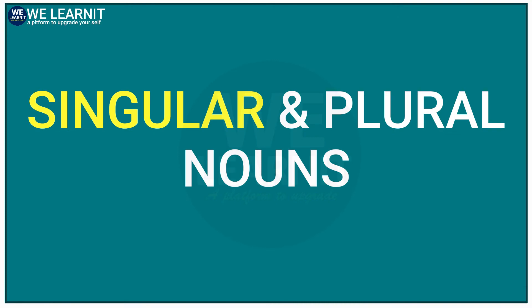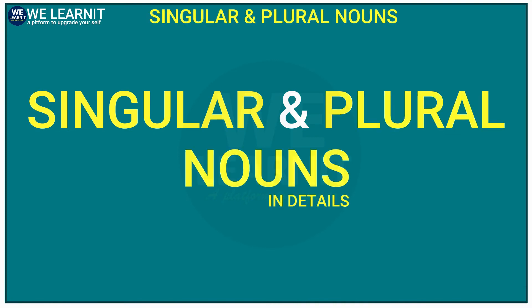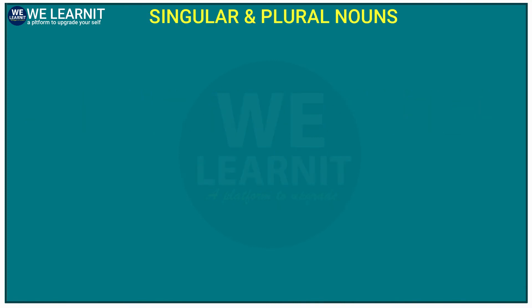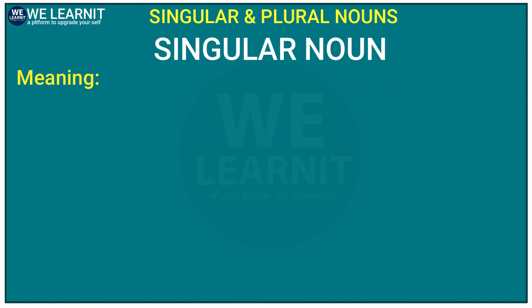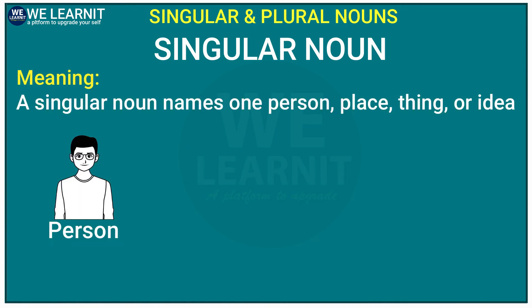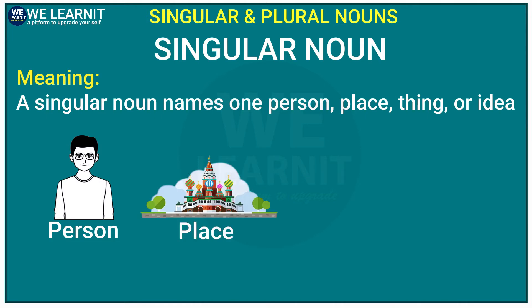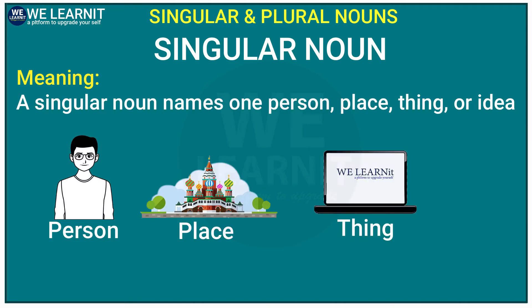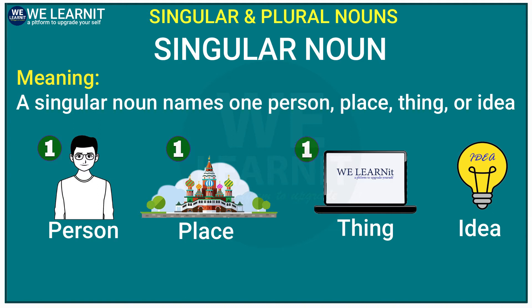Let's look at singular and plural nouns separately. First, we begin with singular noun. The singular noun names one person, place, thing, or idea. Or we can say that the singular noun is the name of one person, one place, one thing, or one idea.